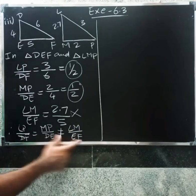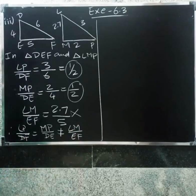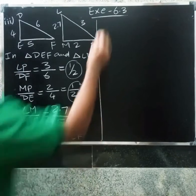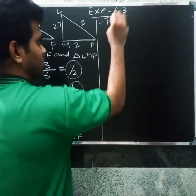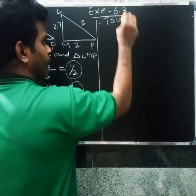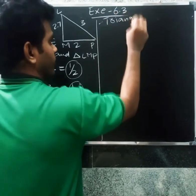These sides are not equal. Therefore, the triangles DEF and LMP are not similar.